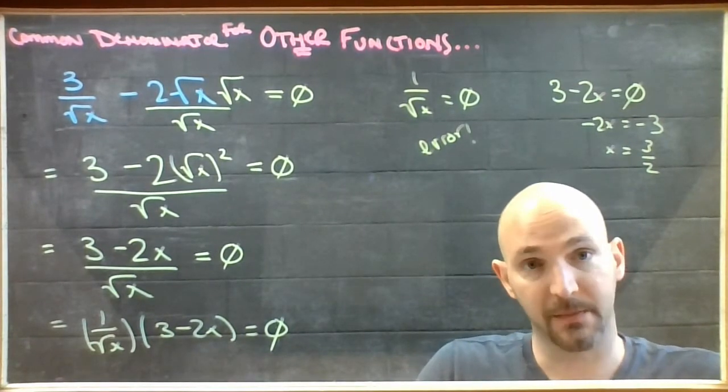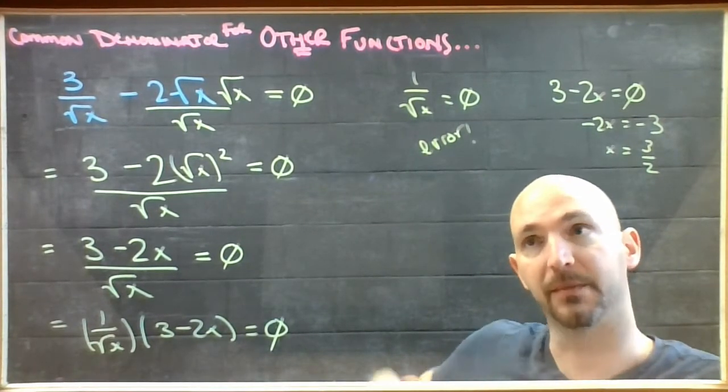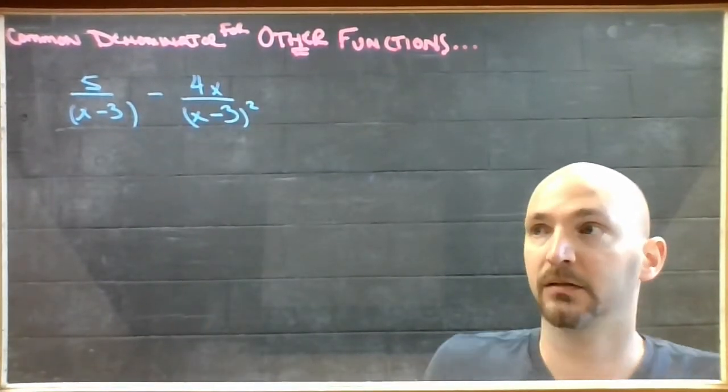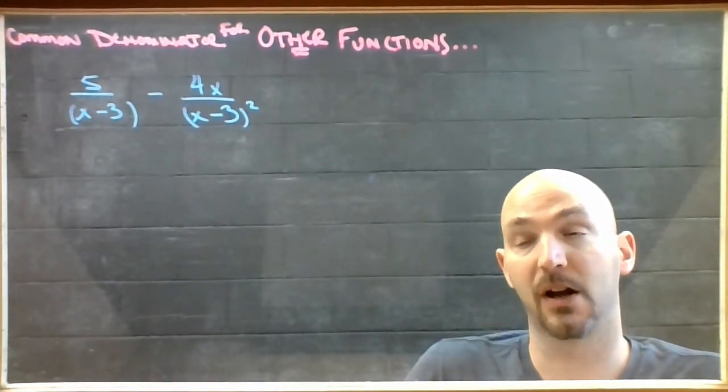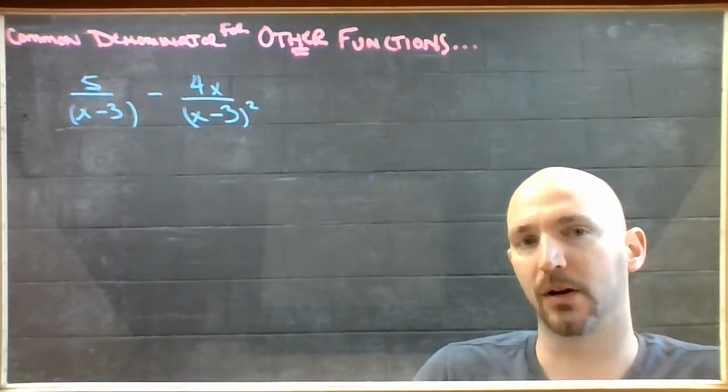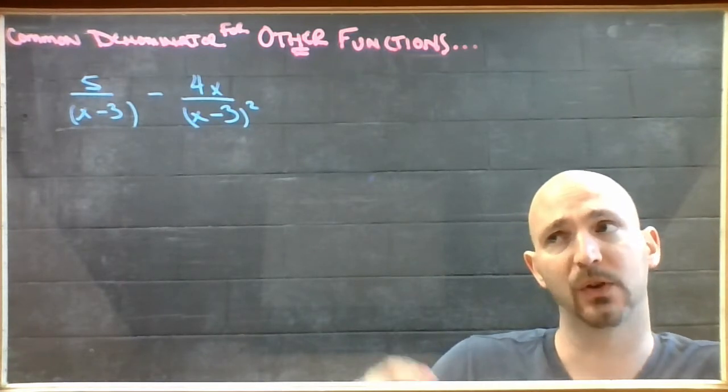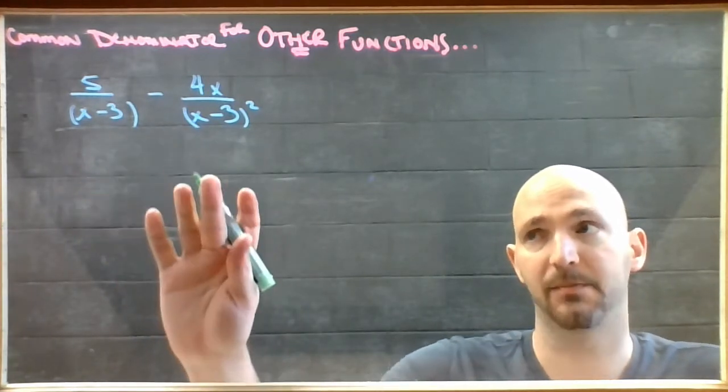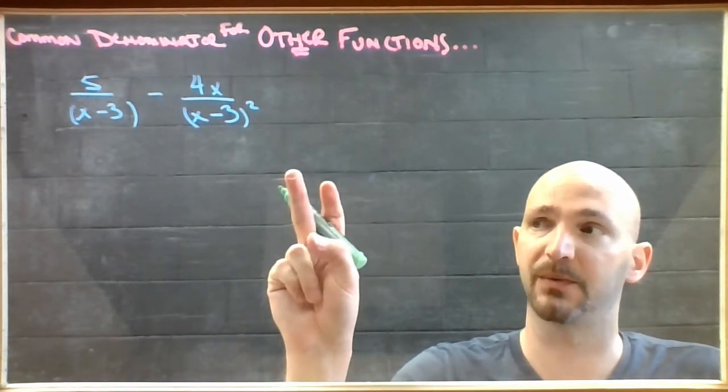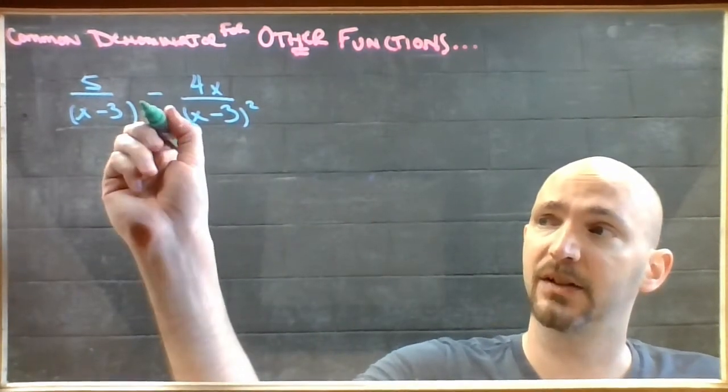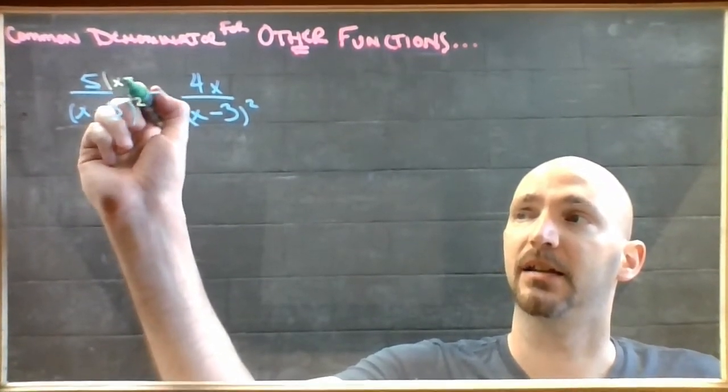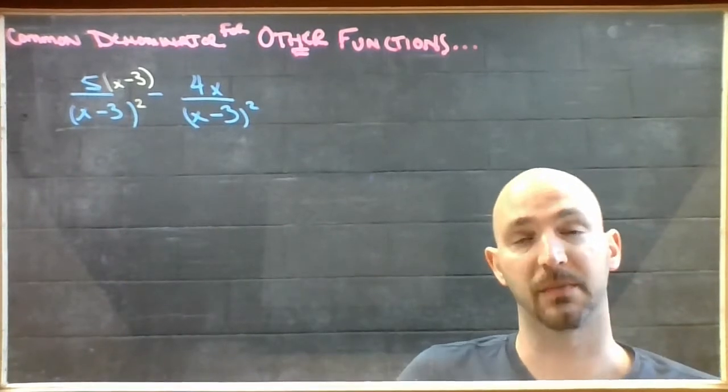Alright, so one more example, and you're off to the practice problems. So the final type of common denominator problem is where you have a match already, they just have the wrong power on them. So if you look at this one, they're both x minus 3 in the denominator, but this one has two powers worth of it. So to get them to match, I need to introduce a second power in the denominator and a new one in the numerator to balance it.